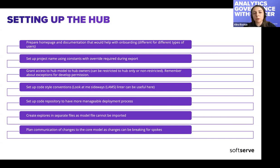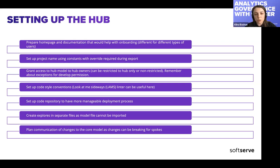Since the hub is designed to be reused, you need to plan the communication of changes to the core model, because changes can be breaking for spokes. If hub developers have restricted access, they will not be able to check which spoke content was broken after a release.